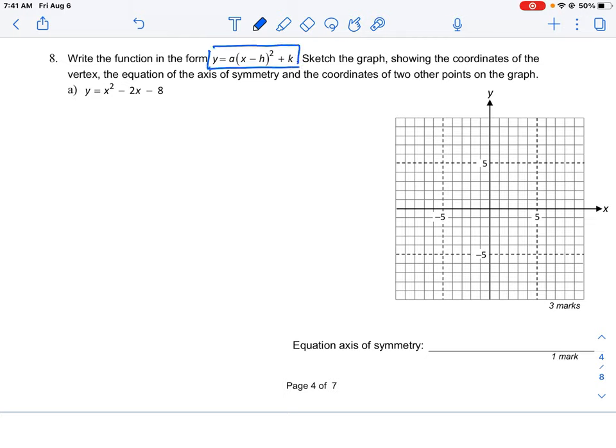So the vertex form is essentially a binomial that we square, and then we just have some constants around the side. What this really looks like is something very similar to what we just did, where we were taking a trinomial and we're converting it back into essentially a perfect square trinomial, just with a little bit of numbers left over on the side, which is the value for k and the number a.